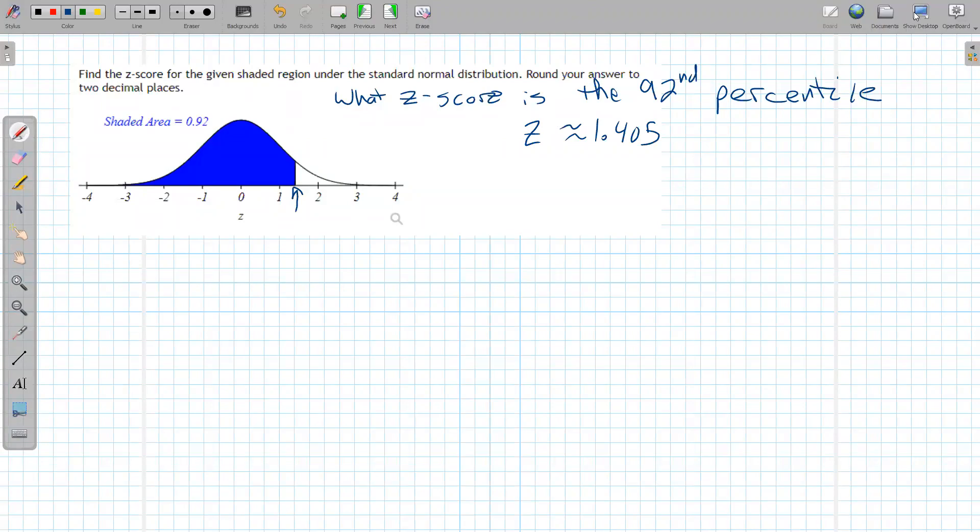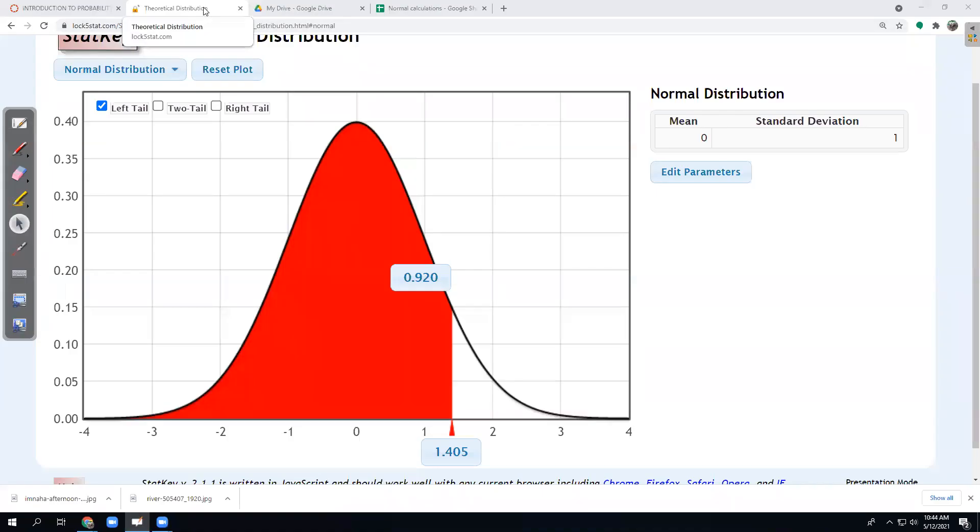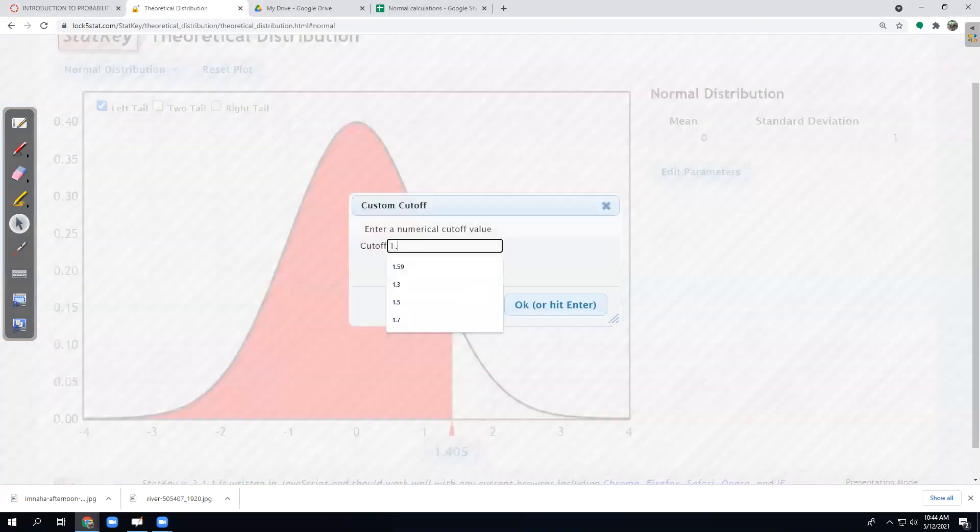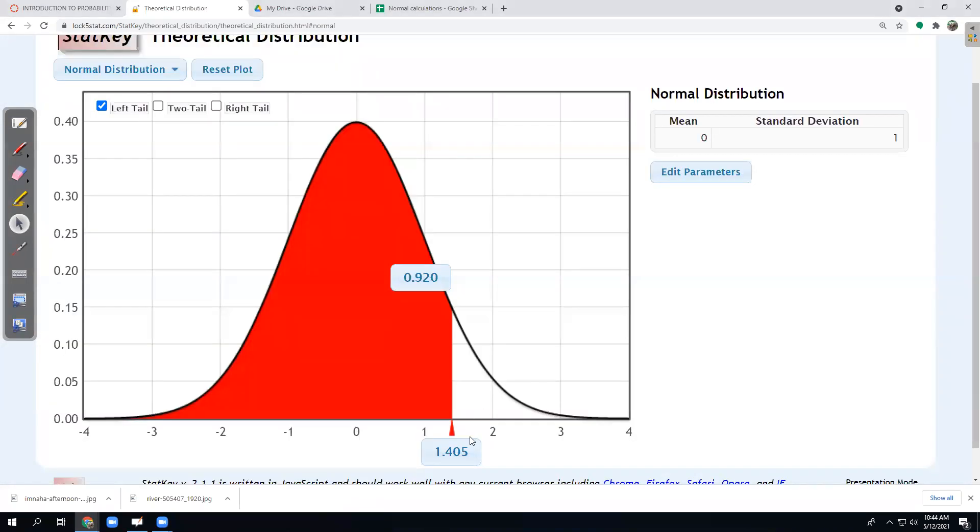And then here, I could reverse it just to double check to see if it works out. I could come back here and overtype that 1.405 and then say OK. And it will recalculate the area and say, yeah, it's about 92% to the left of that. So anytime you replace a number top or bottom, it recalculates what the other number ought to be.